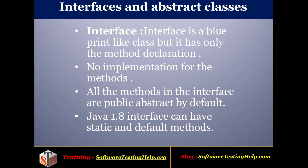What is an interface? Interface is like a blueprint — it's exactly like a class but it has only the method declaration. Interfaces will not have any method implementation. All the methods in the interface are public and abstract by default. From JDK 1.8, the interface can also have static and default methods. You don't need to explicitly declare the public and abstract keywords in the method definition — by default it is public and abstract.